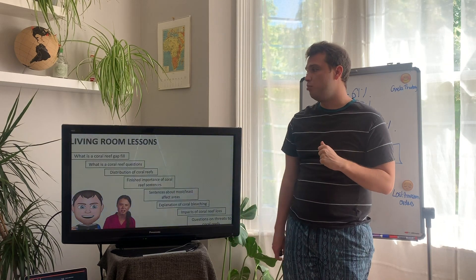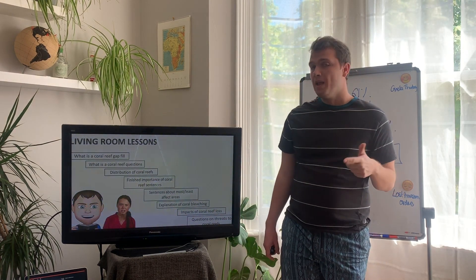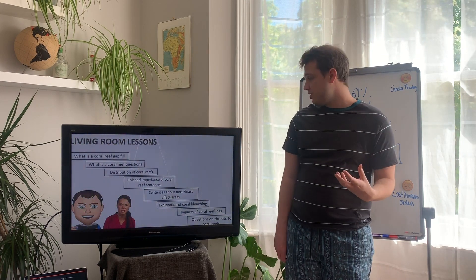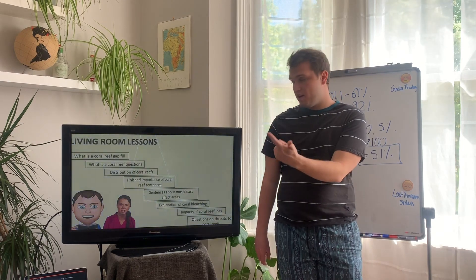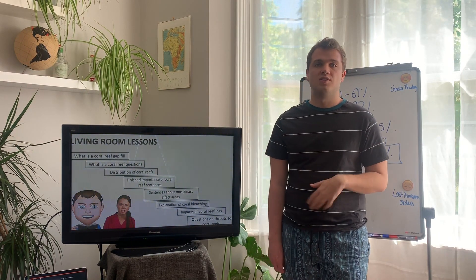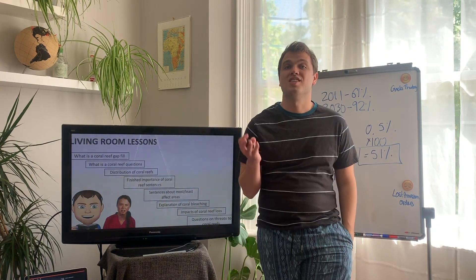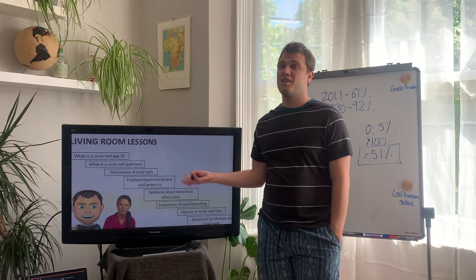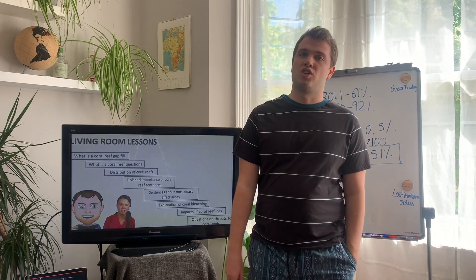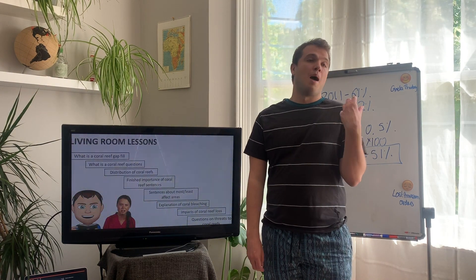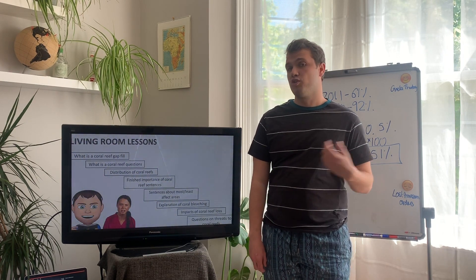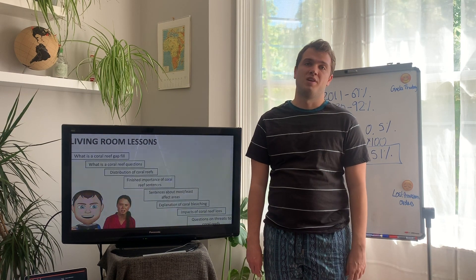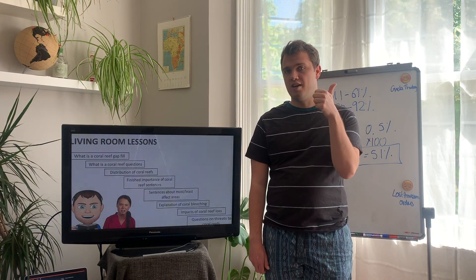We are finished for today. You should have in your books: what is a coral reef gap fill, the questions, descriptions of coral reef distribution, sentences about their importance, sentences about most and least affected areas, explanations of coral bleaching, the impacts of coral reef loss, and those last two questions on threats. Quite a bit today, but hopefully it's helped you understand how climate change impacts these fragile ecosystems. David Attenborough has done brilliant things about coral bleaching - find his series on tropical regions or oceans for really powerful images. Well done, Year 10 - I'll see you very soon.